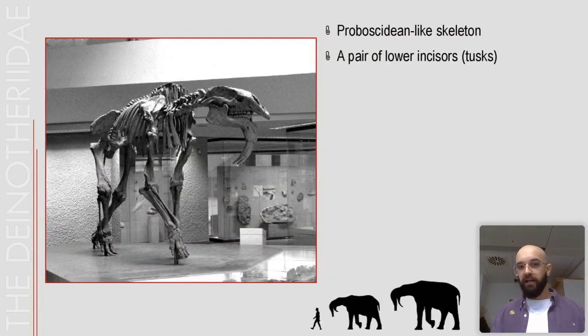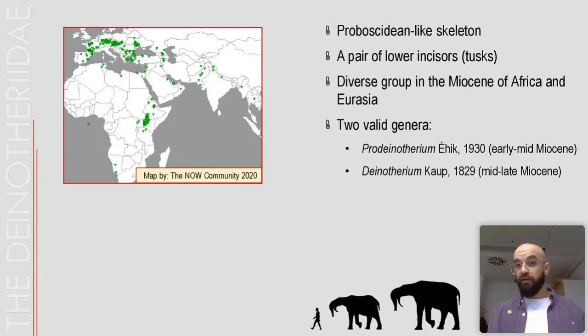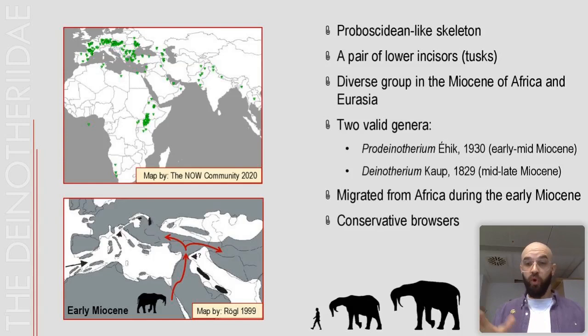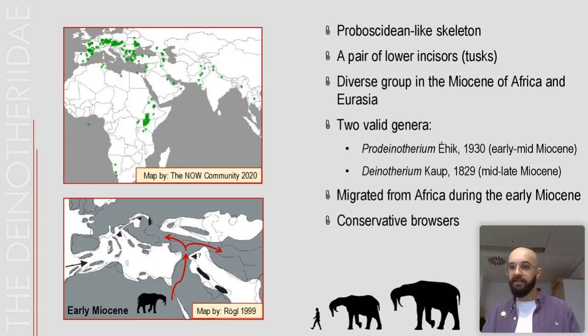The family Dinotheridae includes large to very large animals with a proboscidean-like skeleton and a pair of very characteristic lower tusks positioned exclusively in the lower jaw. From the map you can see that dinotherids were a rather diverse group in palaeoenvironments of Africa and Eurasia. Even though we have a plethora of fossil remains, there are only two recognized taxa: the smaller and older Prodeinotherium, and the younger and larger Deinotherium.